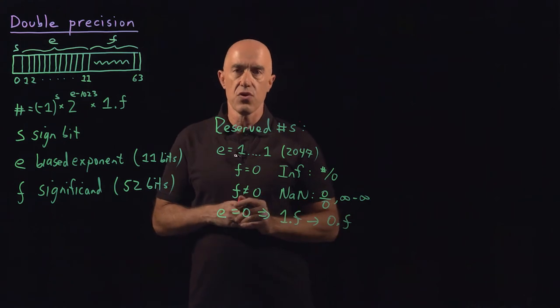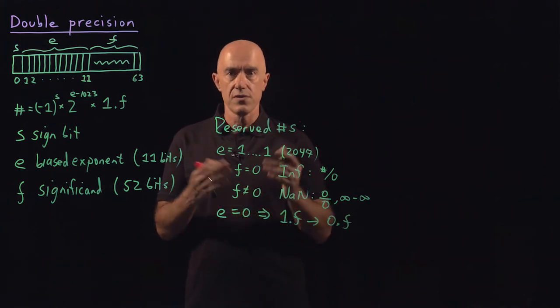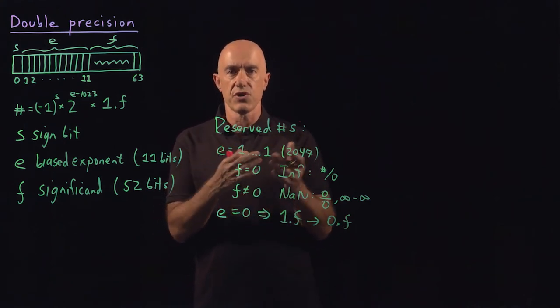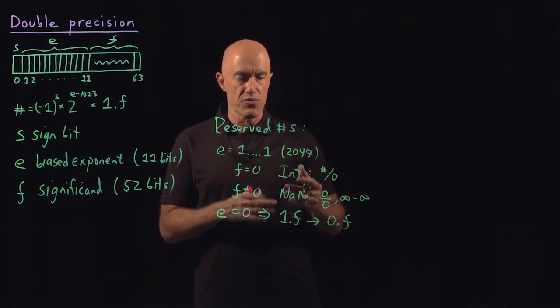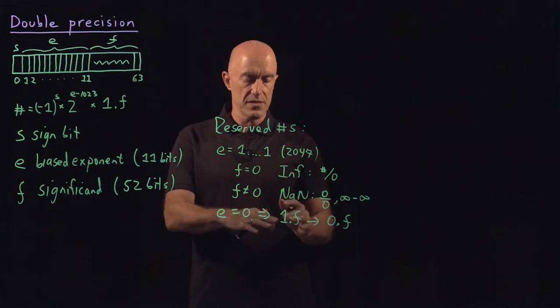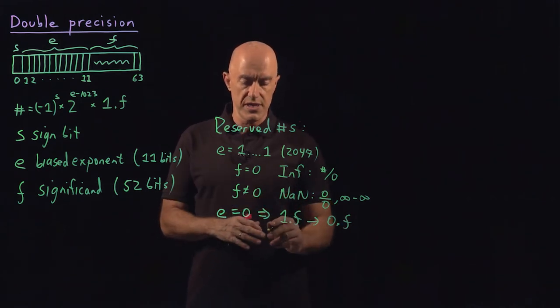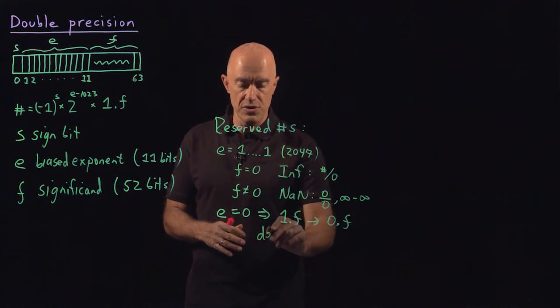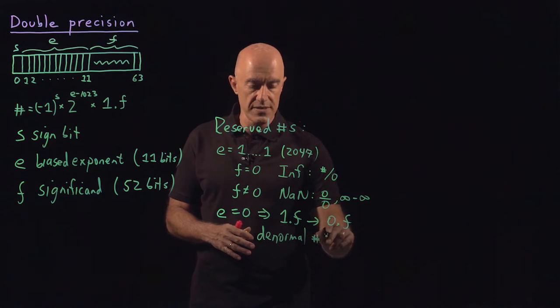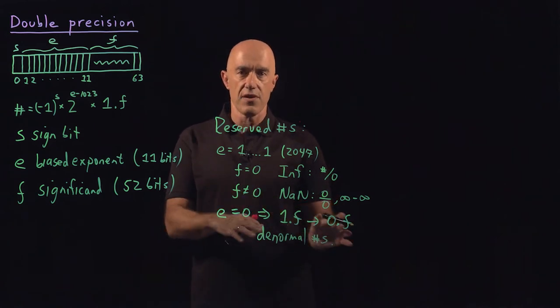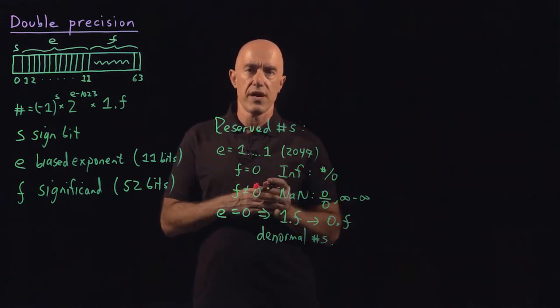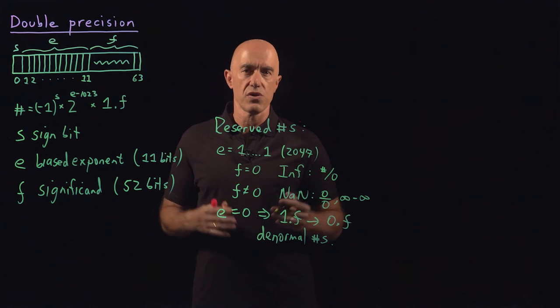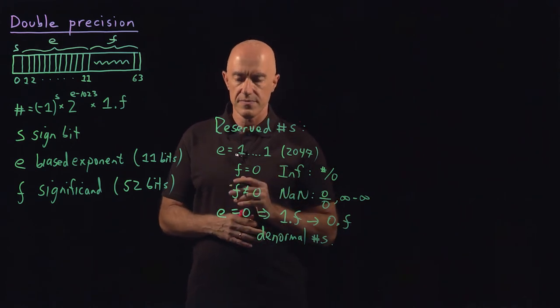What this allows is called graceful underflow. So it allows numbers to go towards zero in a more graceful way rather than just abruptly becoming zero. So you lose all precision here. These are called denormal numbers. And you never want to compute with these numbers because you have very little precision anymore in your numbers. You lose basically all your significant figures.